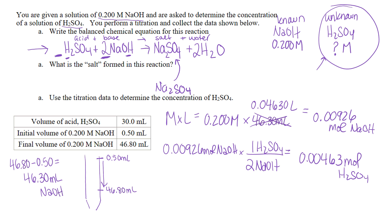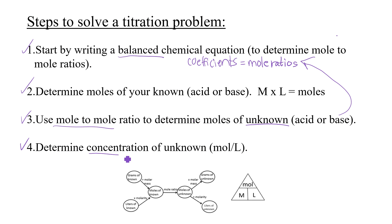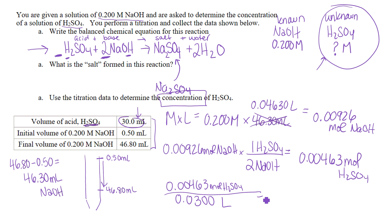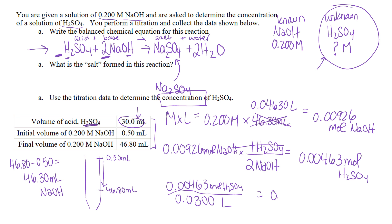I've now figured out how many moles of my unknown I have. The last step is to find the concentration. Step four: determine concentration, measured in molarity, which is moles divided by liters. I take my moles of acid and divide by my volume of acid. There are three volumes here so I need to make sure I choose the right one — this is the volume of my acid, 30 milliliters, which is 0.03 liters. Solving gives a final answer of 0.154 molarity.